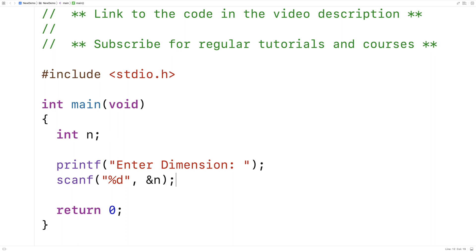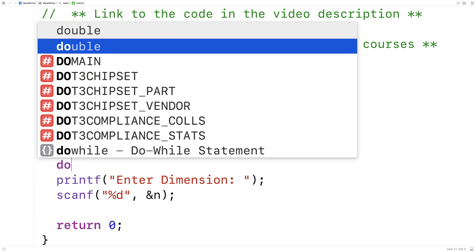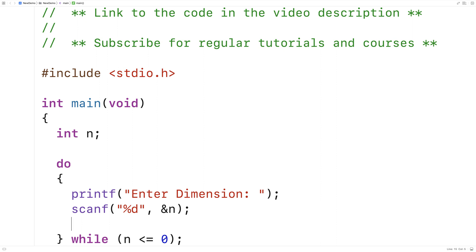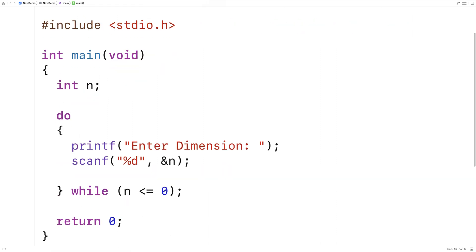It's not going to make any sense to have a multiplication table with dimensions of negative one or zero, so we'll do some input validation and make sure that what is entered is greater than zero. While n is less than or equal to zero, we're going to ask them to enter that value again and warn them what went wrong. Here we'll say if n is less than or equal to zero, printf dimension must be greater than zero.